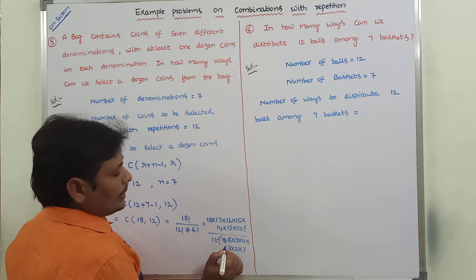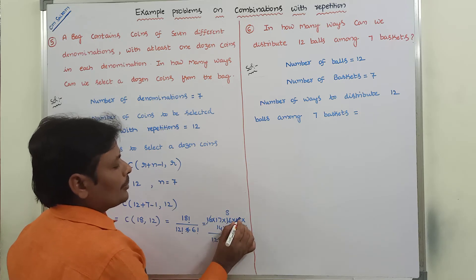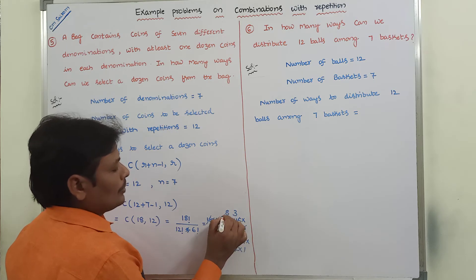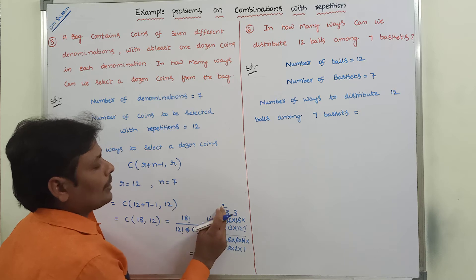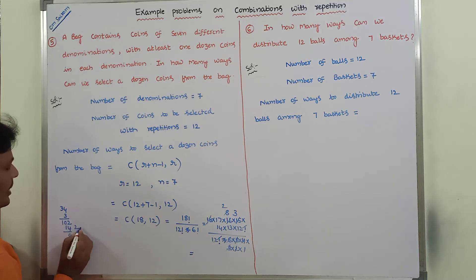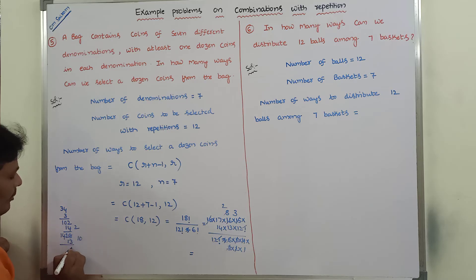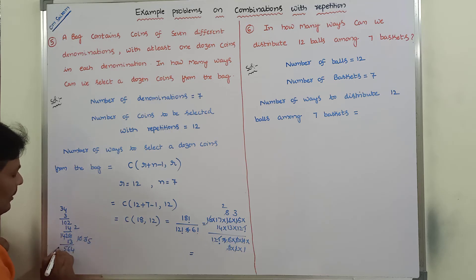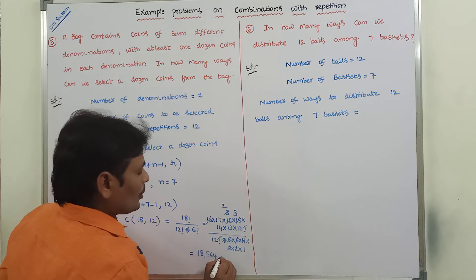After cancellation: 18 is cancelled by 6 × 3, 16 is cancelled by 4 × 2 into part of the denominator, and simplifying the remaining terms 17 × 2 = 34, continuing the arithmetic simplification gives the final answer of 18,564 ways to select 12 coins from the given bag.